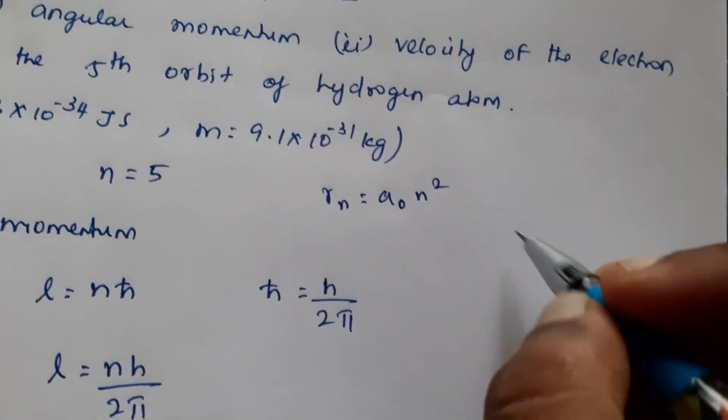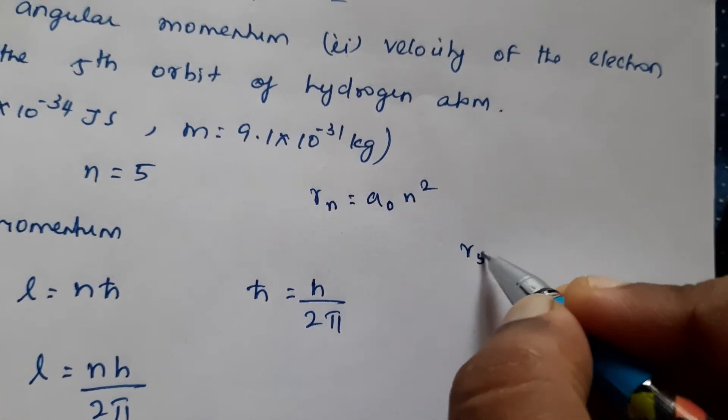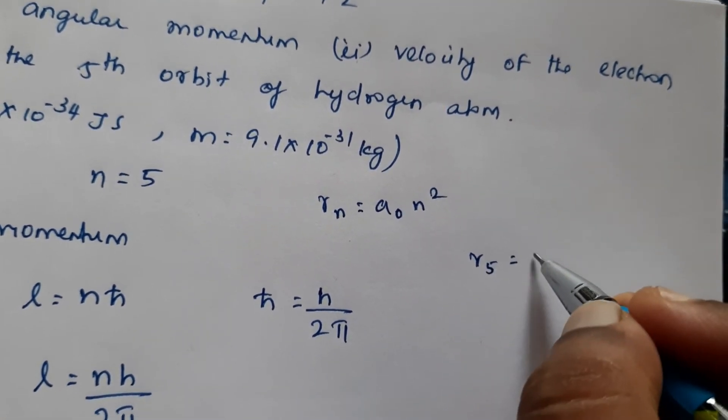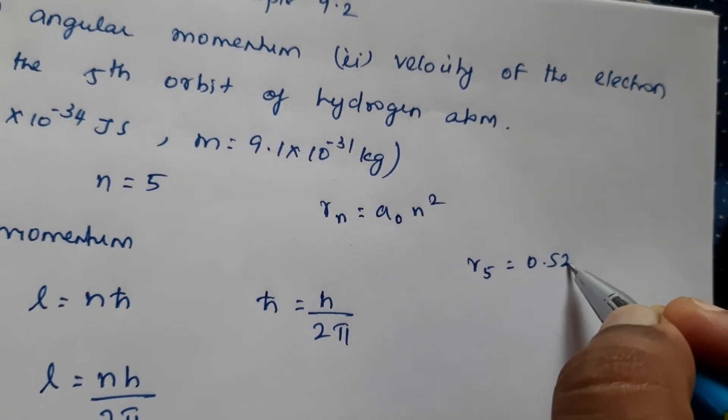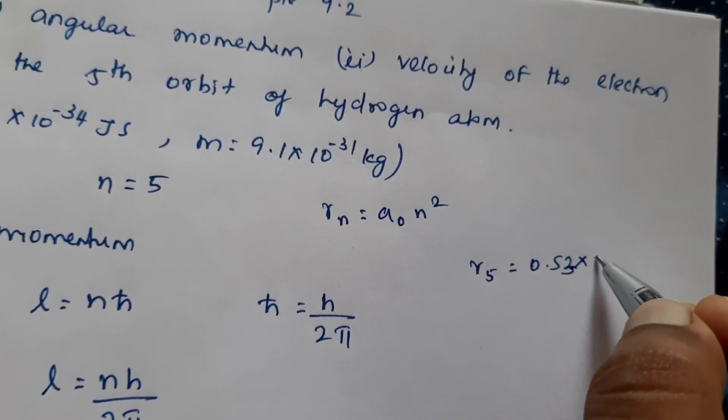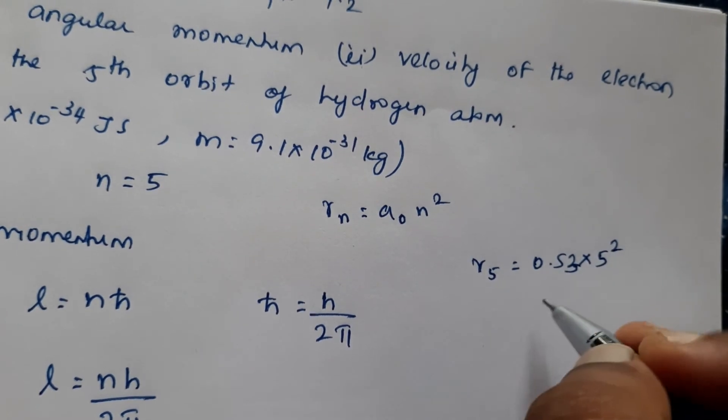So if you use the formula, R5 is equal to A0 value, that is the Bohr radius, that is 0.53 into 5 square.